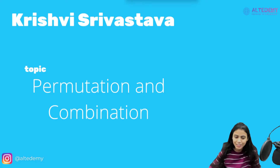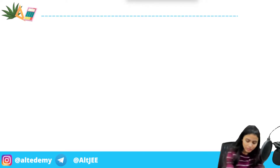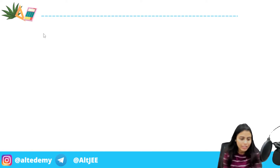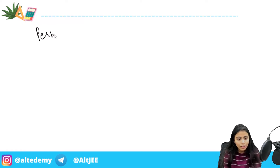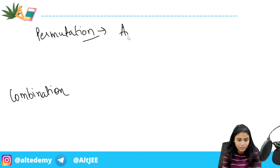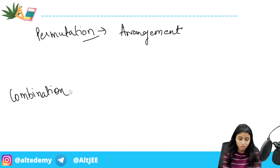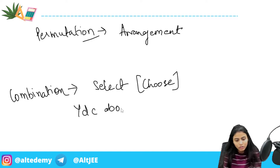Now let's talk about permutation and combination. Many of you know the definition, but I'm not going to waste your time on definitions. The key thing is: what is the difference between permutation and combination, and how do you know where to apply each one? Permutation is applied whenever you have an arrangement to be done — you first choose something and then arrange it. Combination is applied when you only have to select or choose things and you don't care about the arrangement.